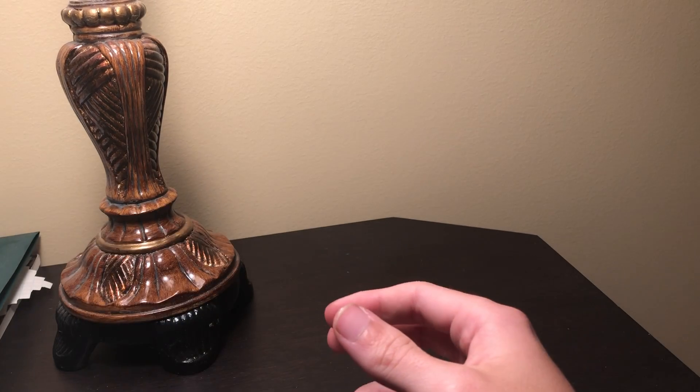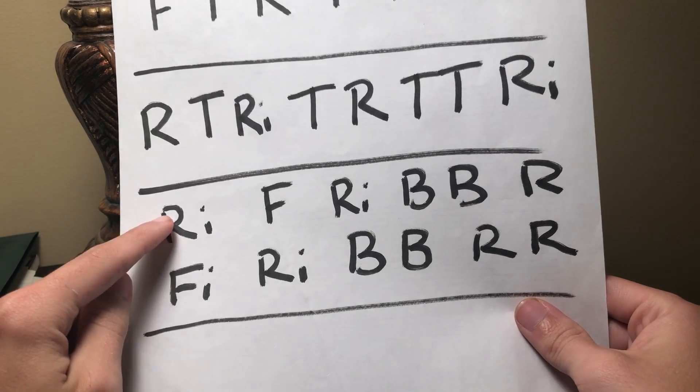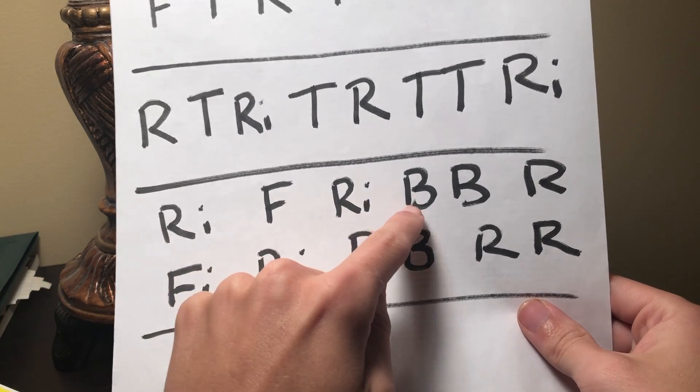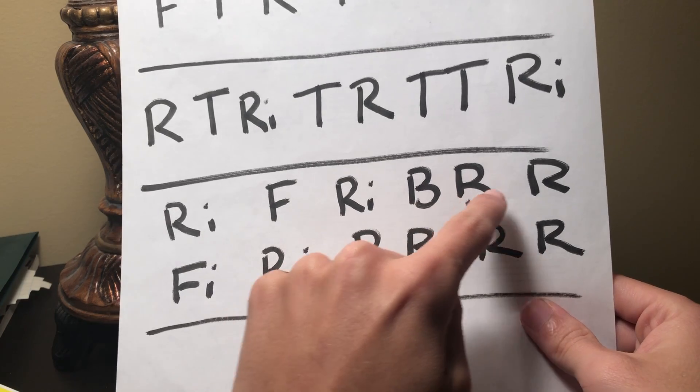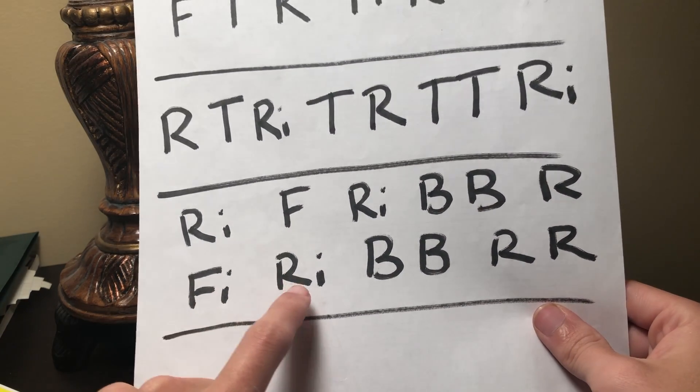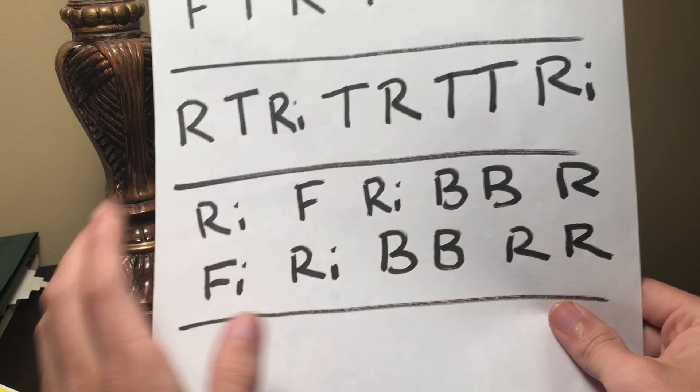So let me show you the next algorithm. It goes like this. Right invert, front, right invert, back, back, right, front invert, right invert, back, back, right, right. Now this one is long and confusing.